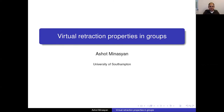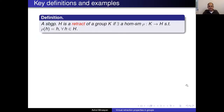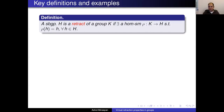I'll start with defining the basic concepts. I'll remind you what a retract is — this is a standard notion. A subgroup is a retract of a group if there is a projection from the group onto the subgroup, in the usual sense that the restriction of the projection to the subgroup is the identity map. So ρ maps K to H and ρ|_H is the identity on H.